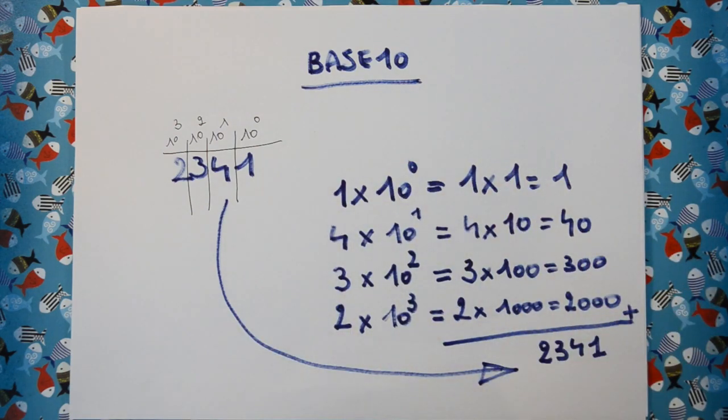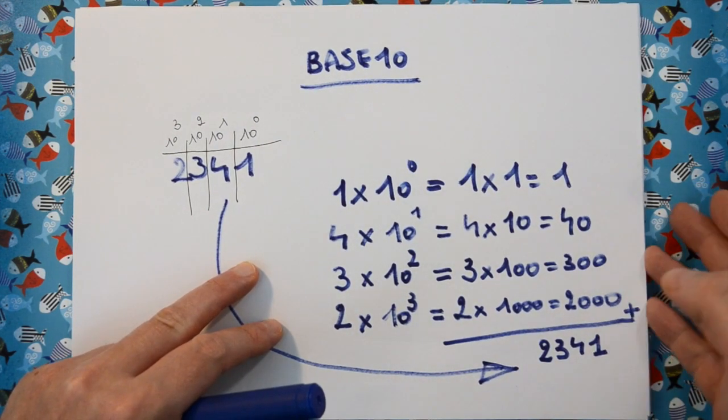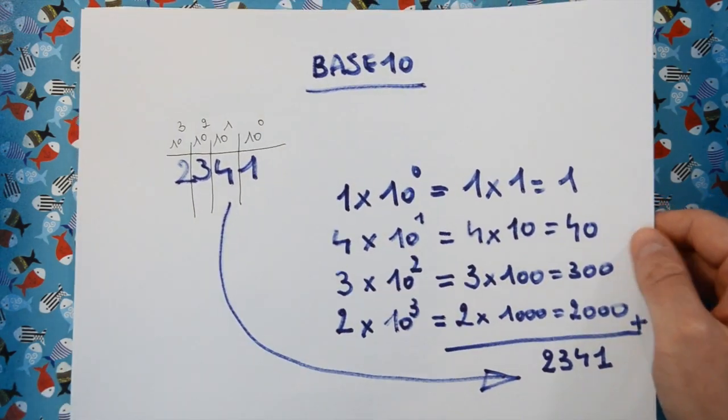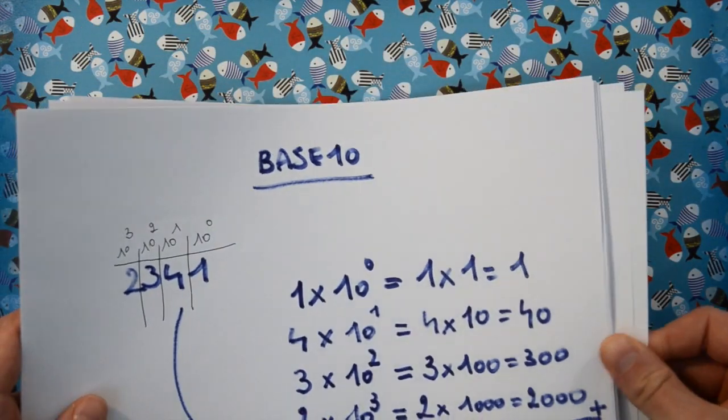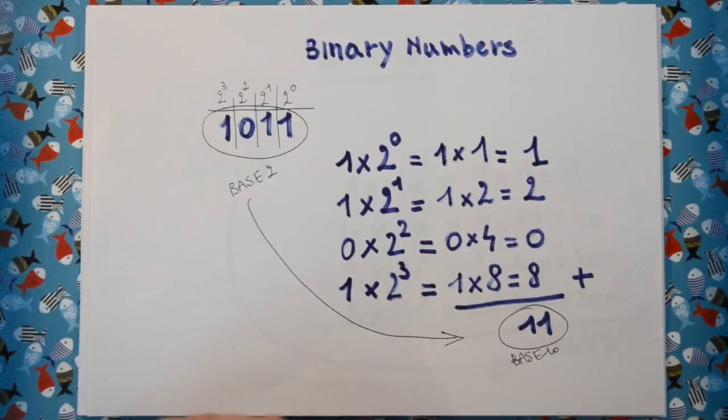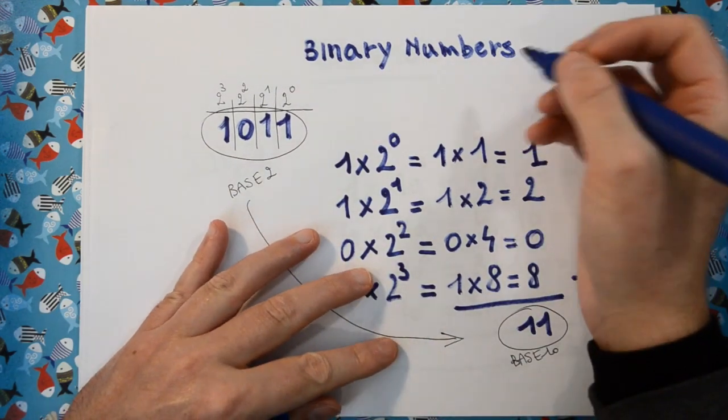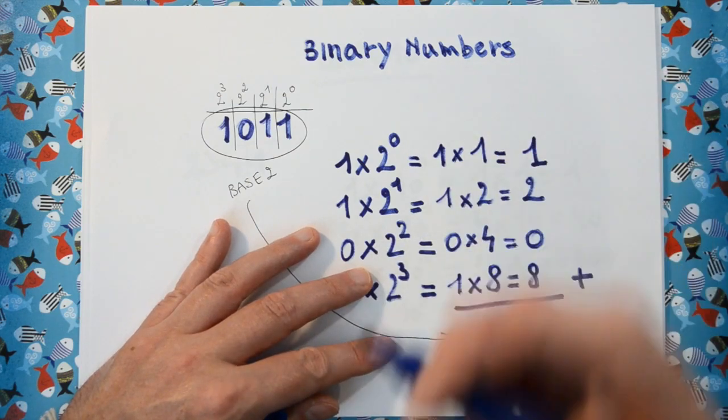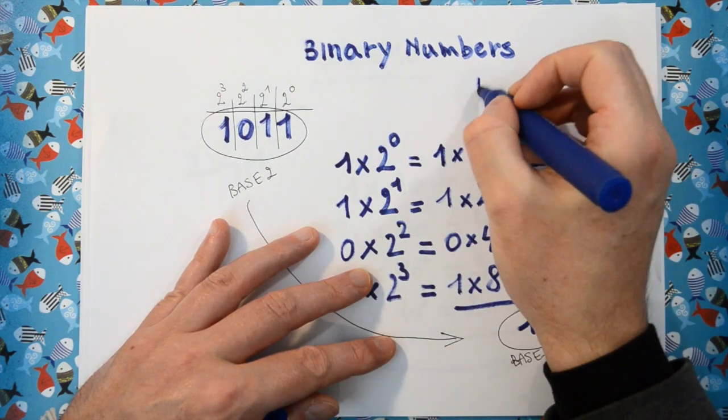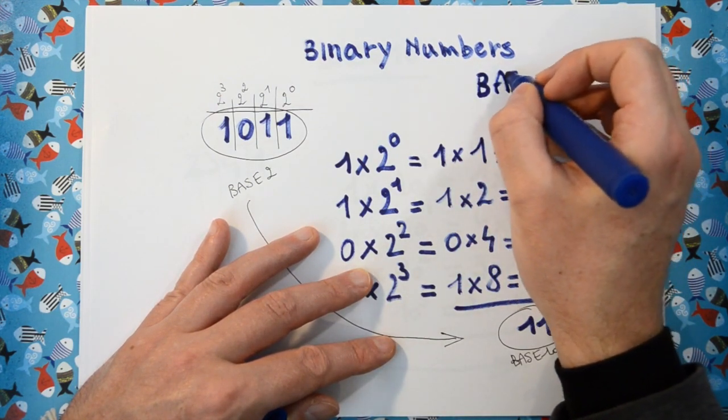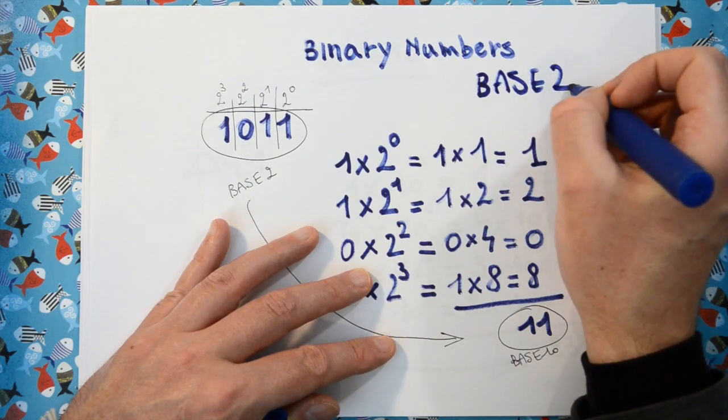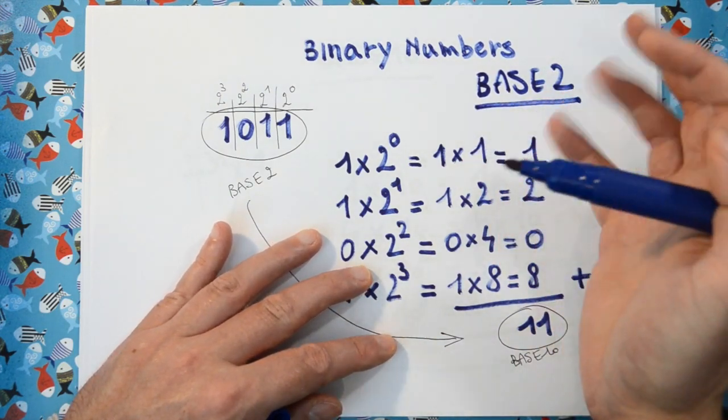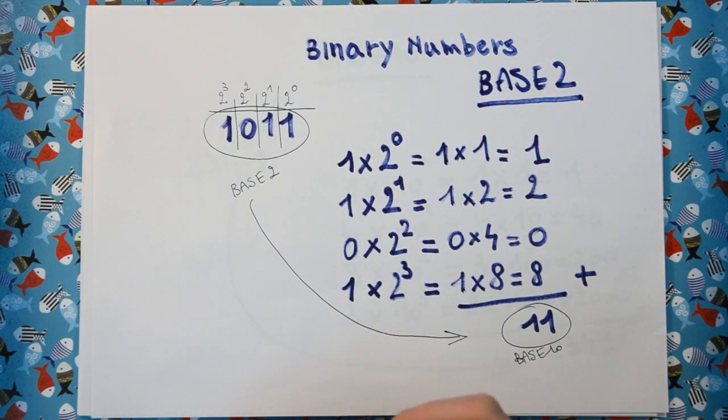But I show you this just to prove that these 2 number systems are really very much alike. But instead of basing our number system on 10 numbers, which we are accustomed to, we're basing our system on 2 numbers. That's why we call this base 2 or binary numbers.